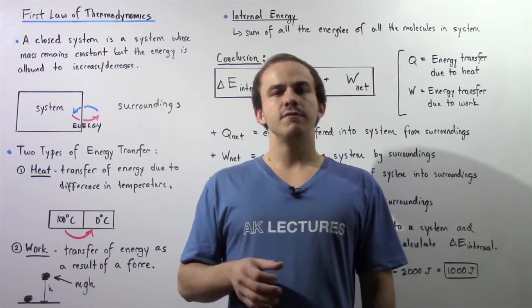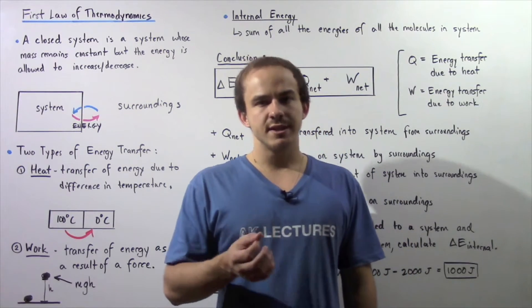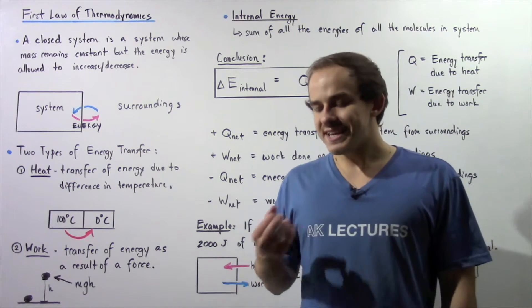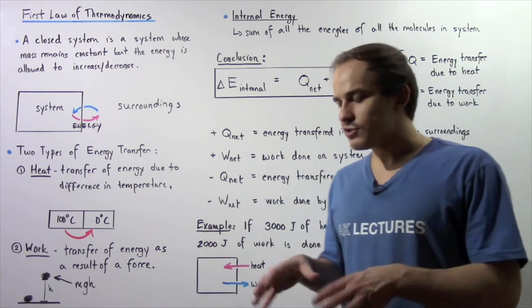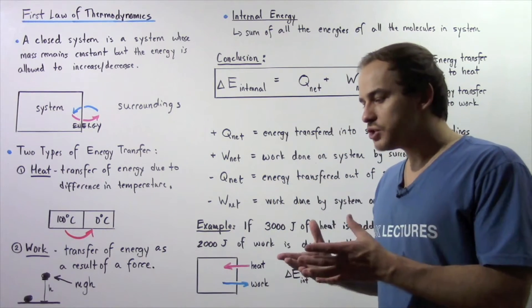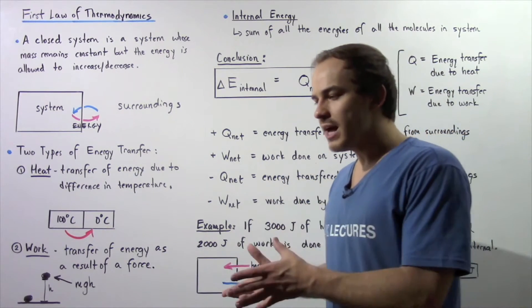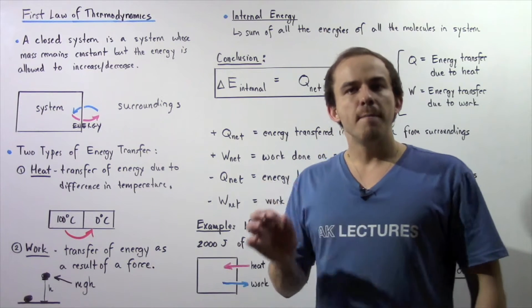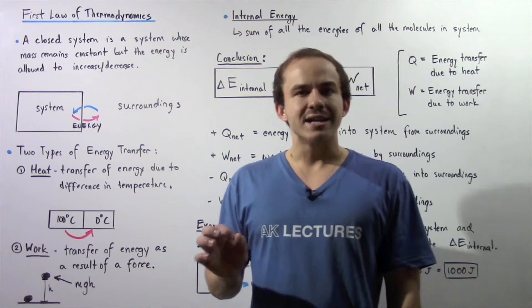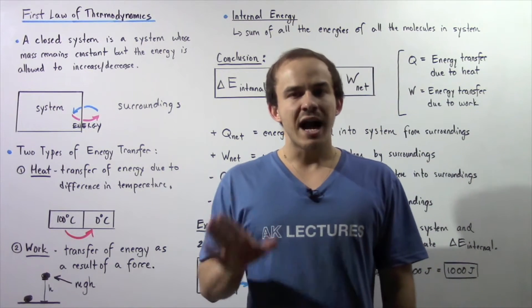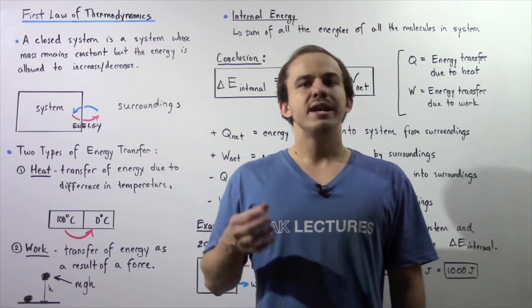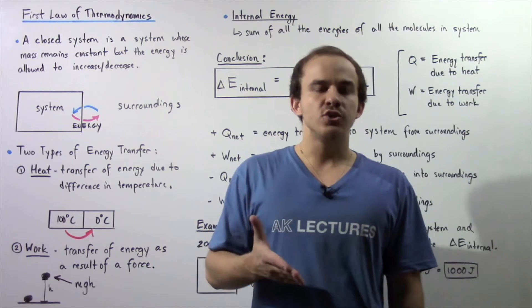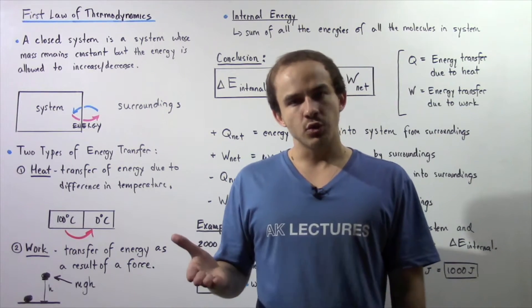Let us recall the definition of a closed system. A closed system is essentially an object that we're studying in which the amount of mass remains constant, but energy is allowed to increase or decrease.